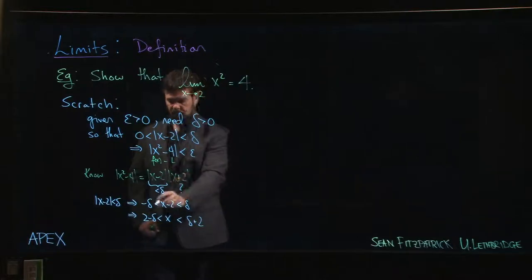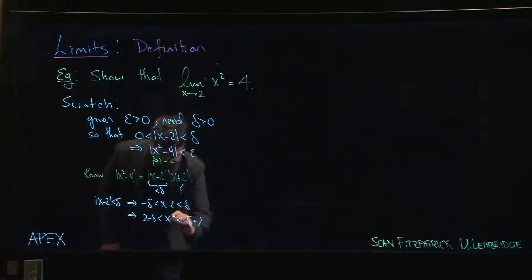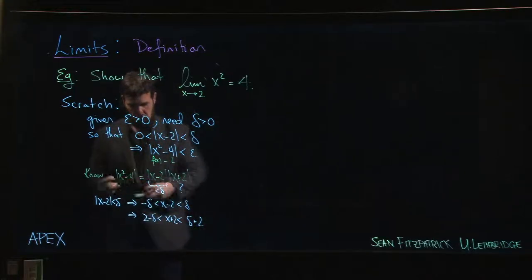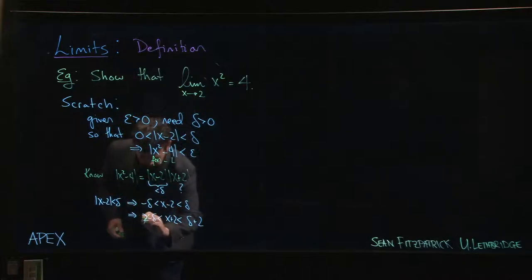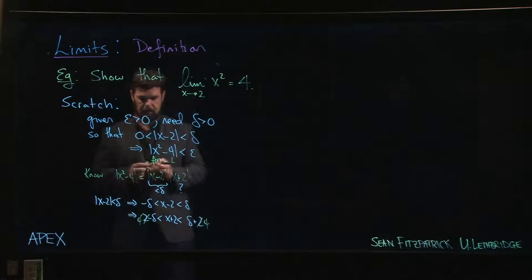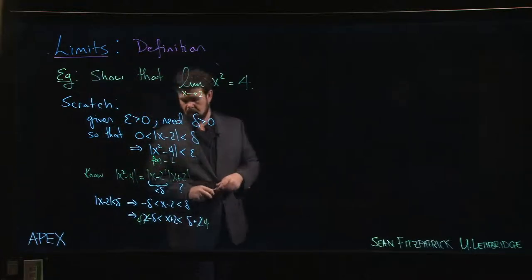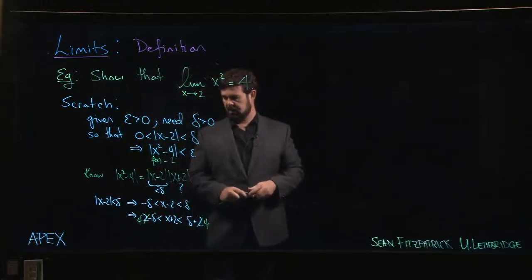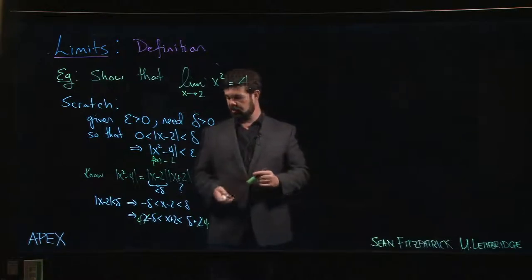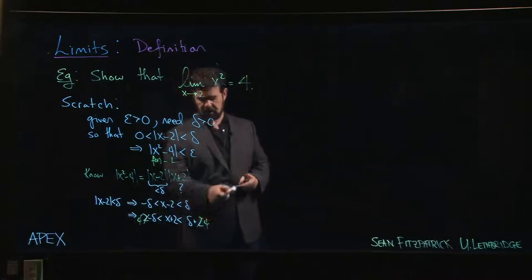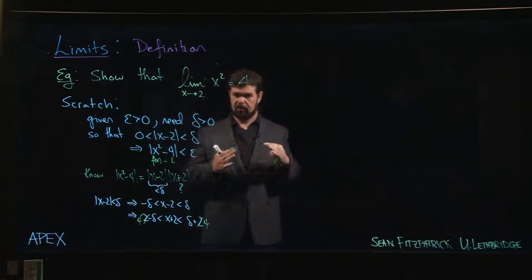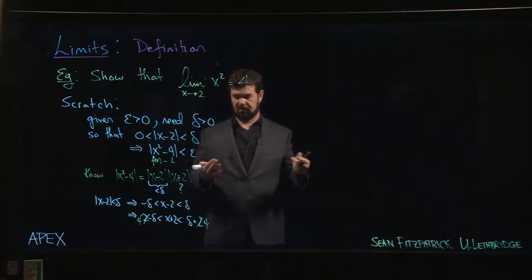And more to the point, we want an x + 2 here. So rather than adding 2 all the way across, let's add 4. So we have x + 2 in the middle and now this 2 becomes a 4 and a 4. So that tells me that x + 2 is somewhere between 4 - delta and 4 + delta. So x + 2 is somewhere around 4 is basically the idea.